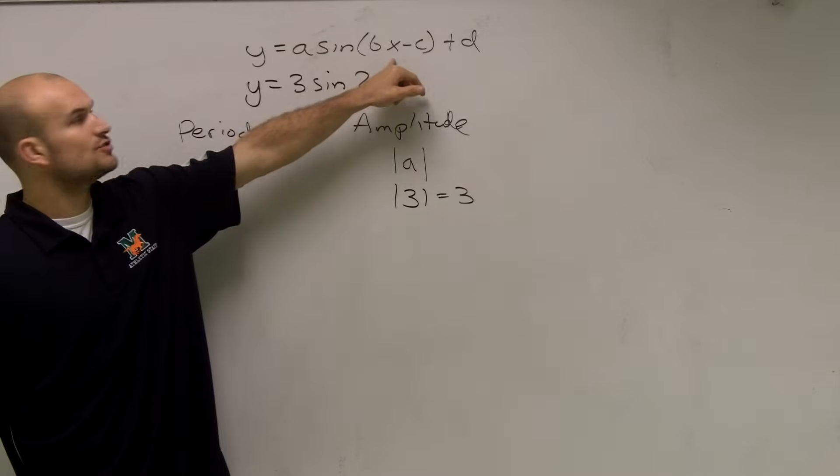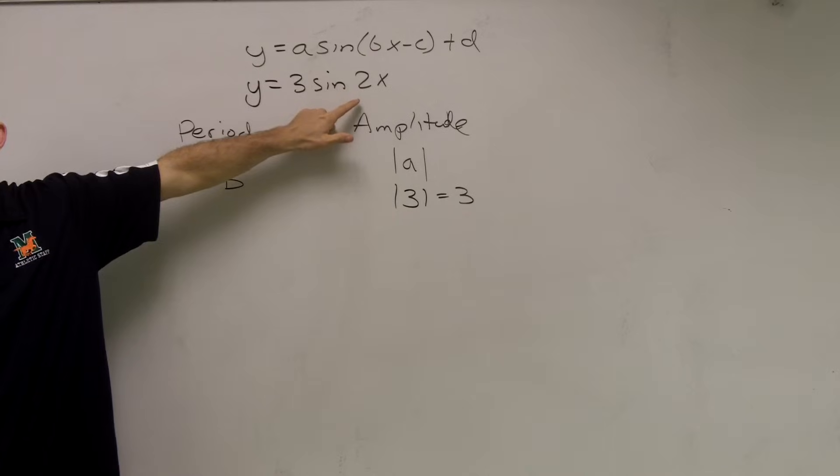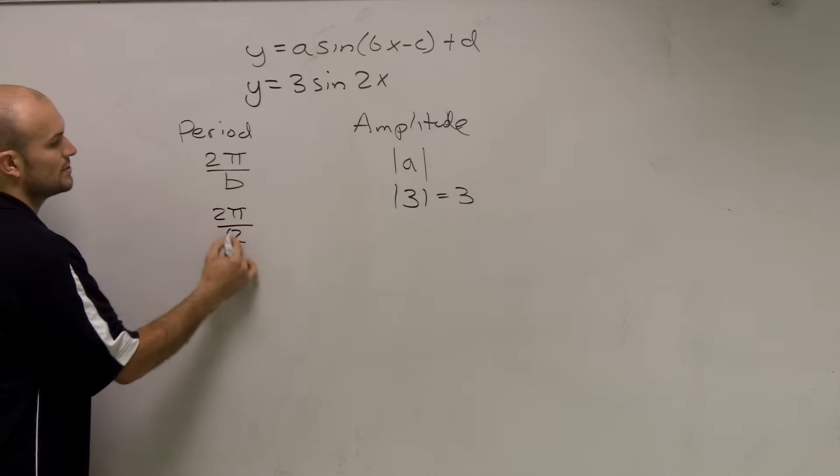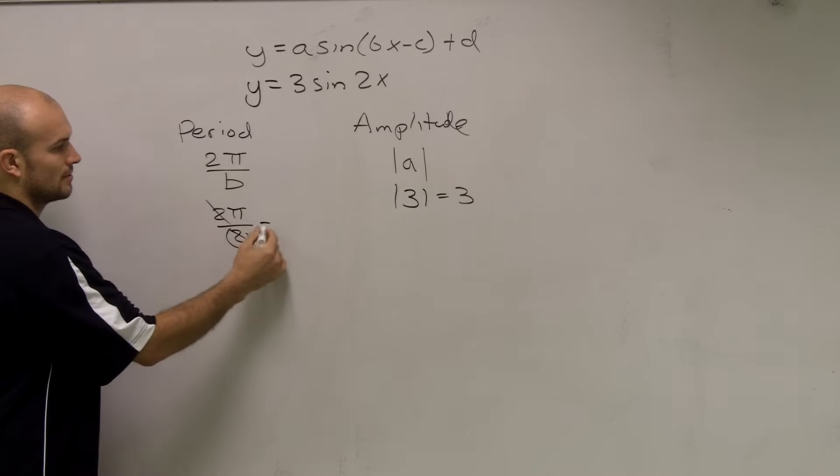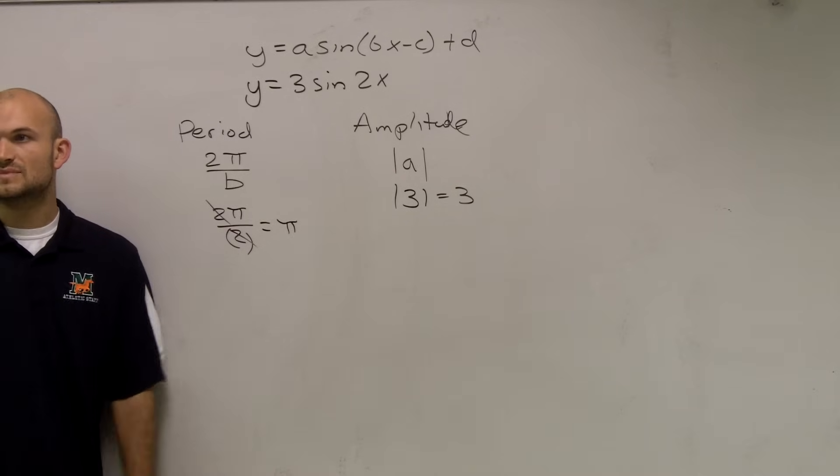Well, b is going to be our number that we can directly put in front of x. Well, we look in this problem, and our number is 2. So it's going to be 2 pi over 2. Well, those can cancel out. So we're just left with pi. Done.